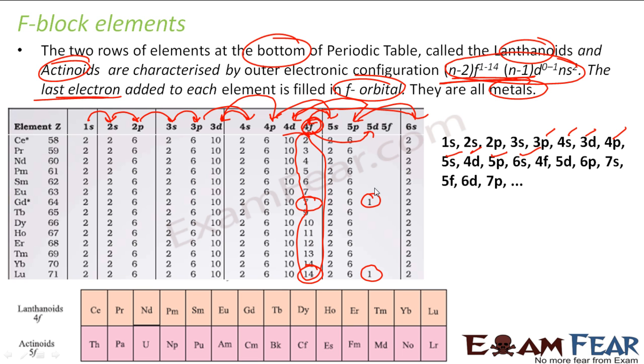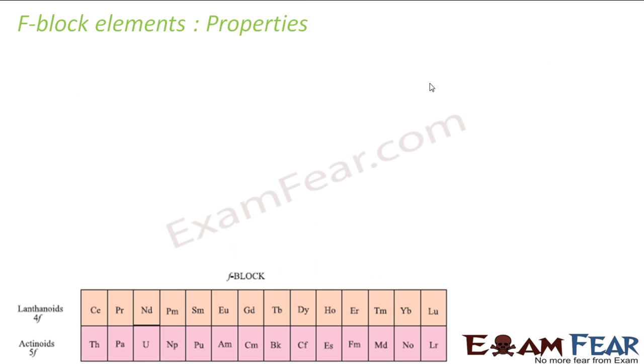The electronic configuration is of this pattern: n minus 2, f 1 to 14, n minus 1 d, 0 to 10, and ns 2.